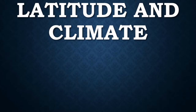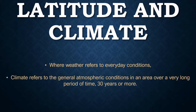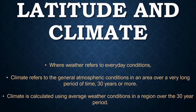Let's just remind ourselves about the definition of climate before we continue. In terms of definition, weather and climate are somewhat similar and easy to confuse. However, whereas weather refers to the general atmospheric conditions over a few hours or days, climate refers to general atmospheric conditions over a very long period of time — 30 years or more. Climate is calculated by using the average weather conditions over this 30-year period.